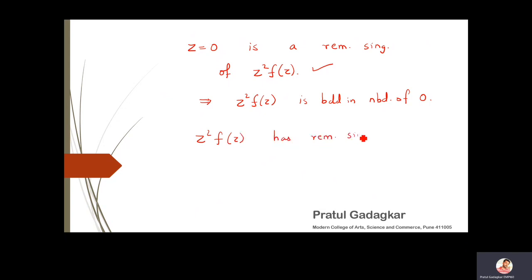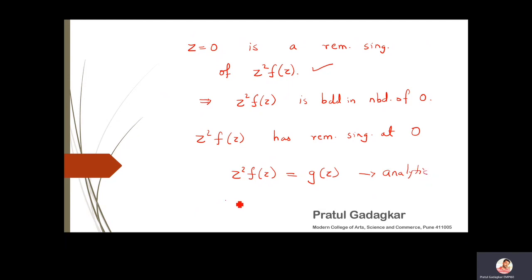Since z²f(z) has a removable singularity at z = 0, it is an analytic function. We can write z²f(z) = g(z), where g(z) is holomorphic in the open unit disk. Therefore f(z) = g(z)/z², which means z = 0 is a pole of order two of f.